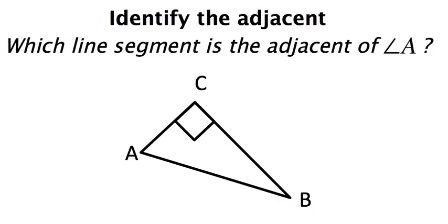This question is asking me to identify which line segment is adjacent to angle A. So here's point A. So here's angle A right there. Which line segment is adjacent to angle A?